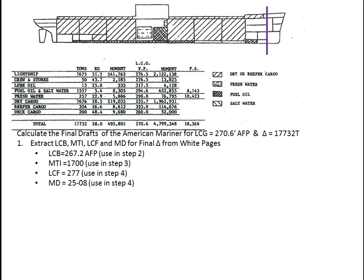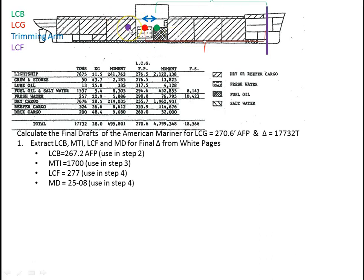Let's reference the various positions on the vessel. For the American Mariner, the reference location is the forward perpendicular, represented by a purple line. The LCB (green dot) is the longitudinal center of buoyancy, and longitudinal center of gravity is slightly aft of it. Since gravity is aft of buoyancy, this vessel will trim by the stern. The difference between those two — the blue distance — is the trimming arm. LCB was 267.2 feet and LCG was 270.6 feet.